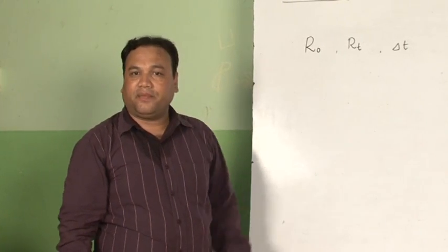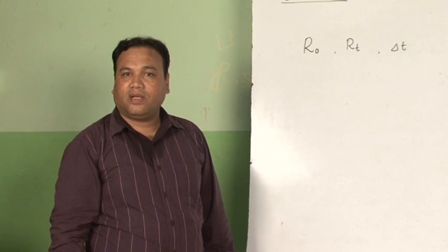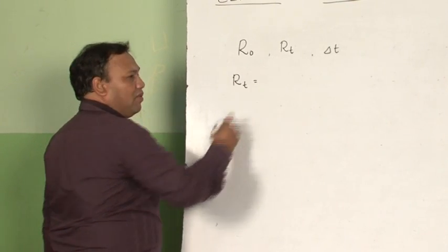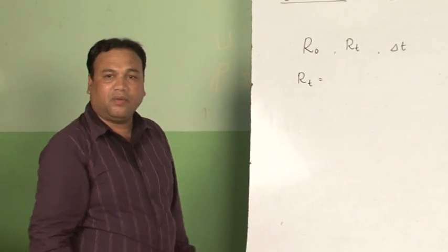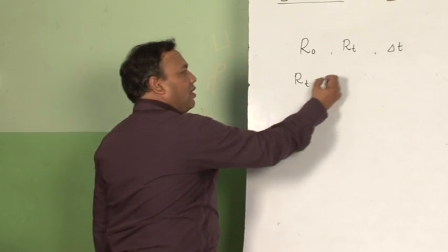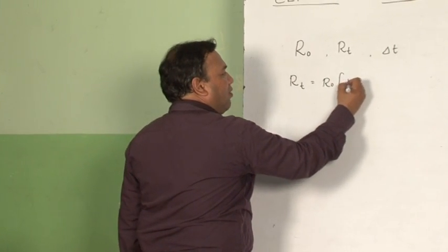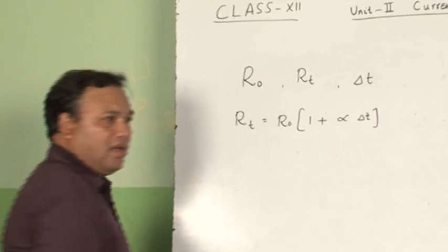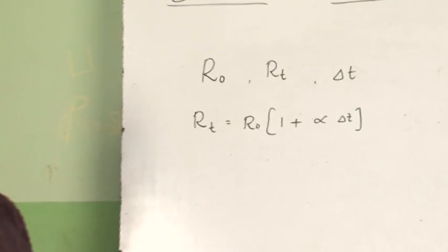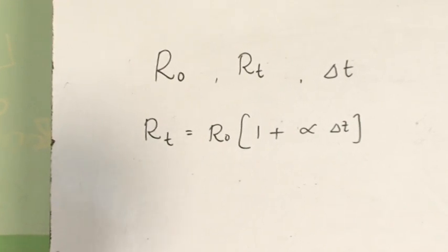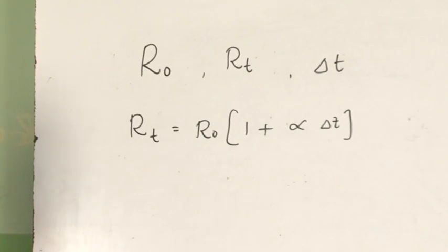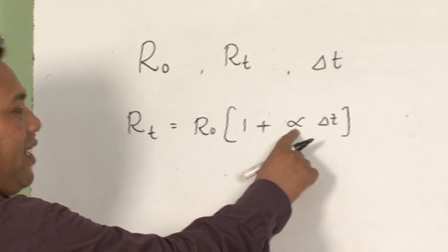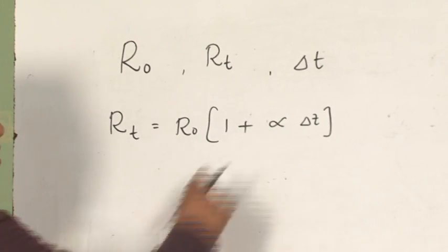How are these three related? They are related by the equation: R T equals R naught multiplied by (1 plus alpha delta T). This is a linear relation, and alpha is one constant of proportionality in this equation.